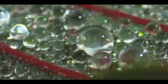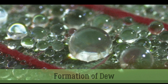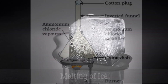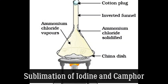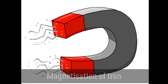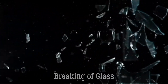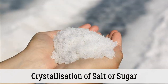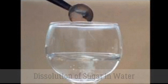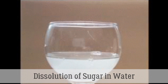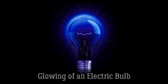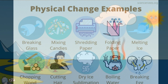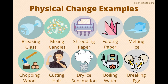Examples of physical change include the formation of dew, melting of wax, melting of ice, sublimation of iodine and camphor, magnetization of iron, breaking of glass, drying of wet clothes, crystallization of salt or sugar, dissolution of sugar in water, glowing of an electric bulb, formation of water vapour, etc. These are just a few common examples of physical change.